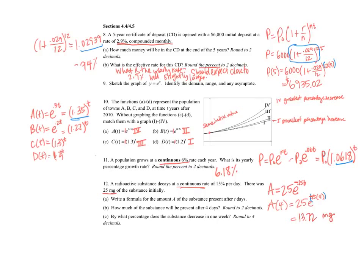Then by what percentage does the substance decrease in one week? So now T stands for the number of days, right? And so one week, that would be seven days. Oh, I'm supposed to round to four decimals. So we'll do A of seven equals, let's figure out how much is there in a week. So I get 8.7484.